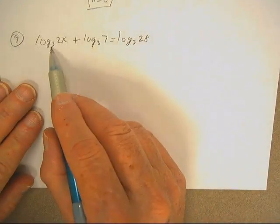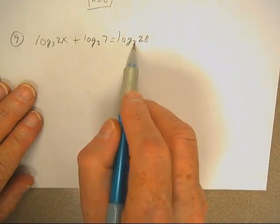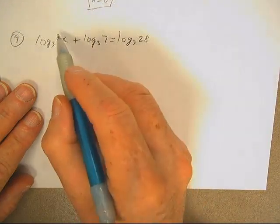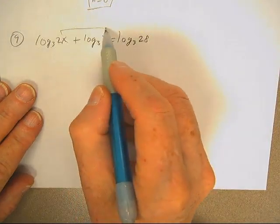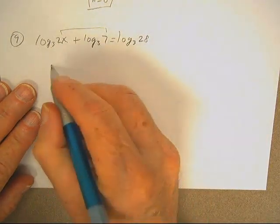All right, then, I've got log base 3, base 3, base 3. That's good. And I'm going to want to multiply those two.